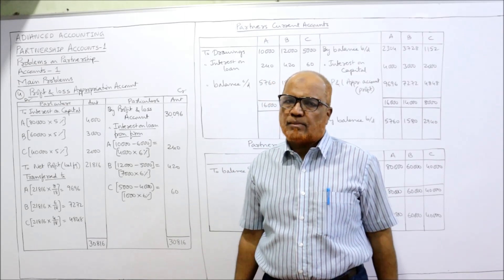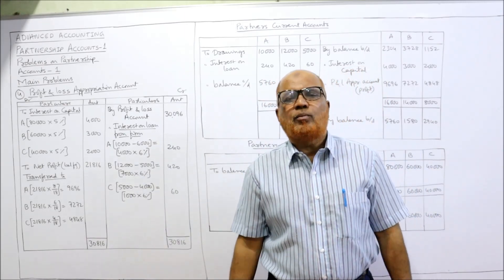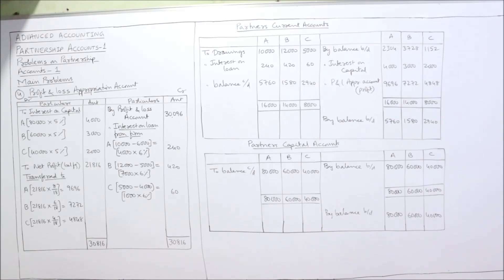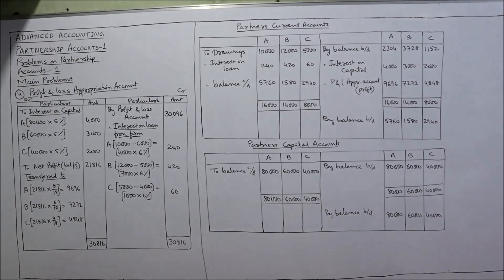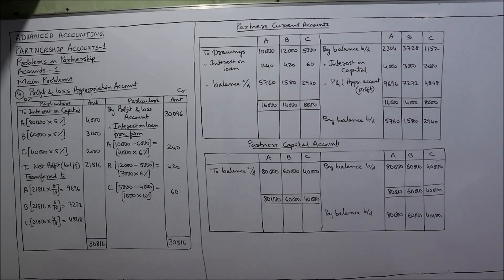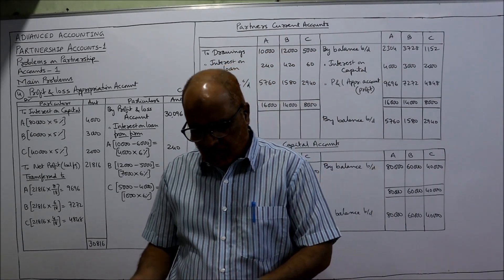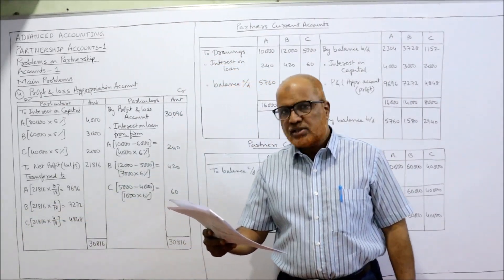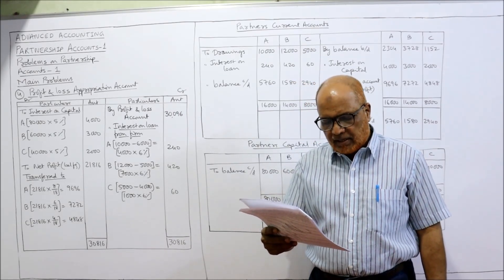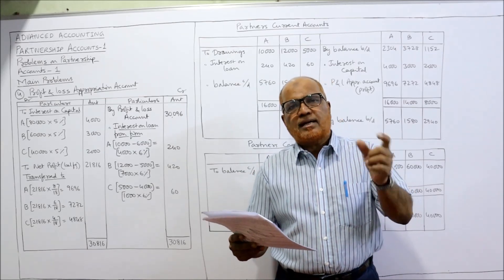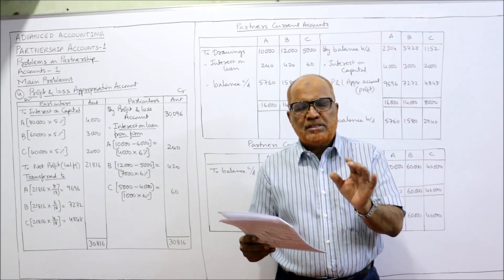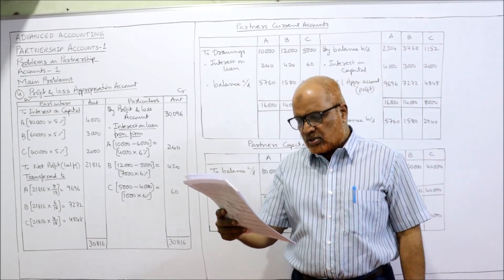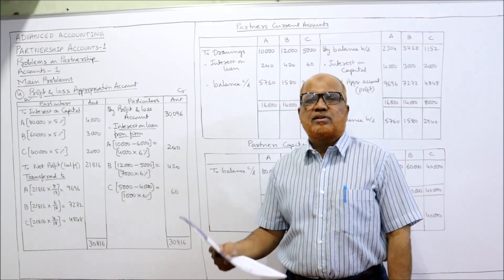Take a screenshot of the points written on the board, then I'll explain every point in detail. Now, problem number four: A, B, and C are partners sharing profits and losses in proportion to their capital at the beginning of the year. Three partners — A, B, C — share profits in the capital ratio. They are entitled annually to draw six thousand, five thousand, and four thousand respectively out of their anticipated share of profits.